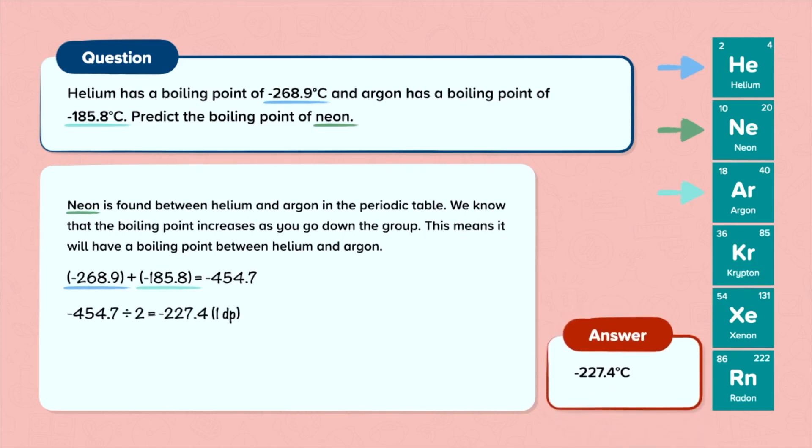So our answer is minus 227.4 degrees Celsius to one decimal place. The actual boiling point is 246 degrees Celsius. The calculation above is an approximation.